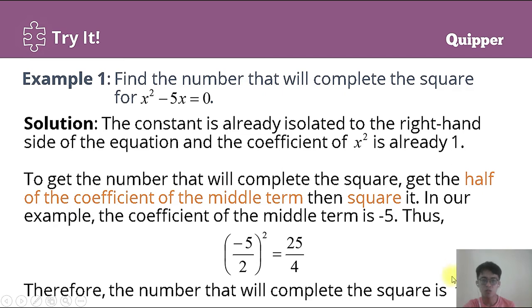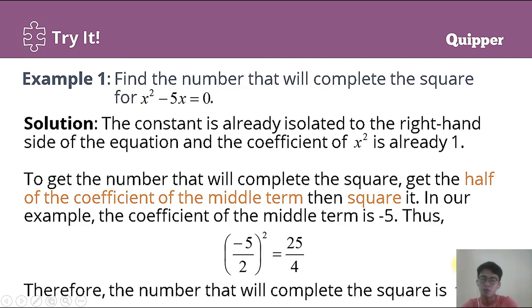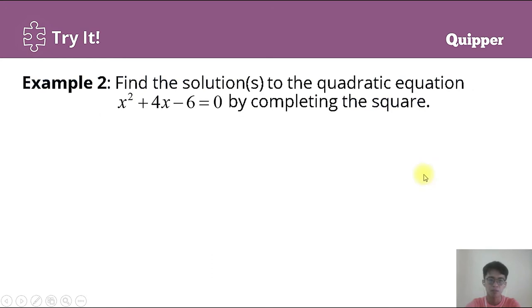Therefore, the number that will complete the square is 25/4. This means 25/4 is the number we will add to the equation in order to create a perfect square trinomial.